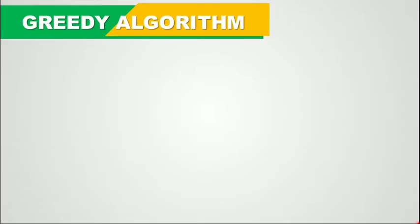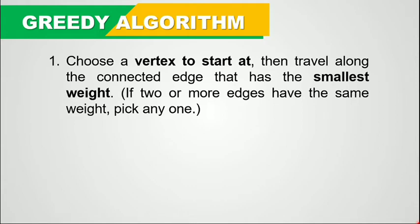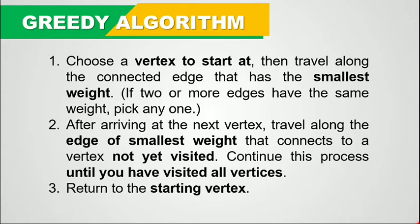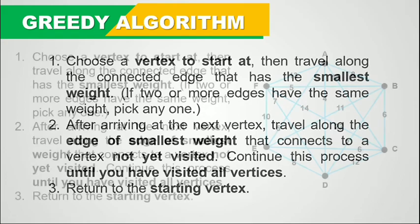Hi guys, in this video I'm going to demonstrate how to use the greedy algorithm in order to find a Hamiltonian circuit in a complete graph. Now these are its steps. First, we have to choose a vertex to start at. Then we have to travel along the connected edge that has the smallest weight. If two or more edges have the same weight, we have to pick any one. We travel along the edge of smallest weight that connects to a vertex not yet visited, and continue until we have visited all vertices. The third step is to return to the starting vertex. This is how the greedy algorithm works.